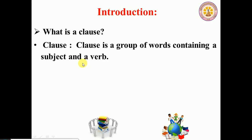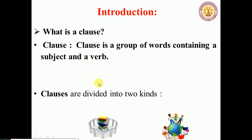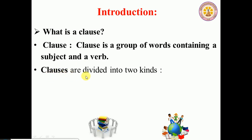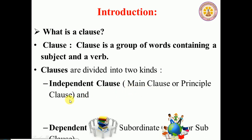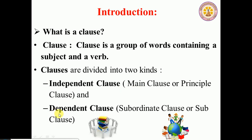Clauses are divided into two kinds. The first one is the independent clause, also called the main clause or principal clause. The other is the dependent clause, also called the sub-clause or subordinate clause.